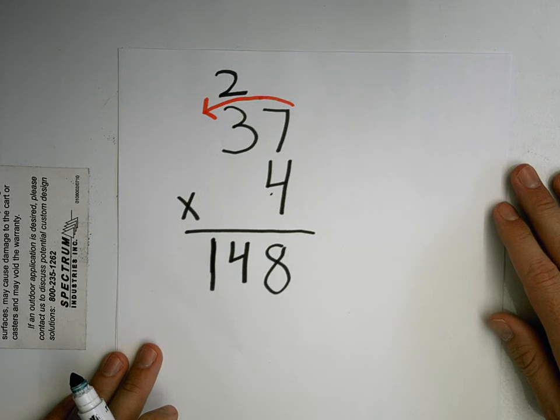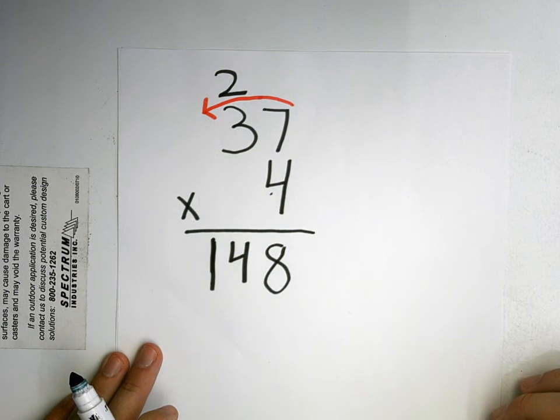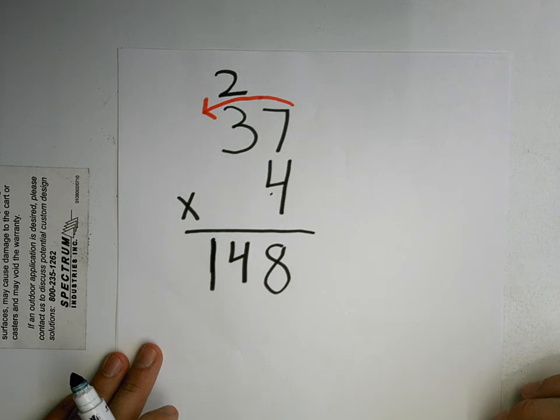And then when my number is more than ten, I put it up top, then after I multiply, I add. So thirty-seven times four is one hundred and forty-eight.